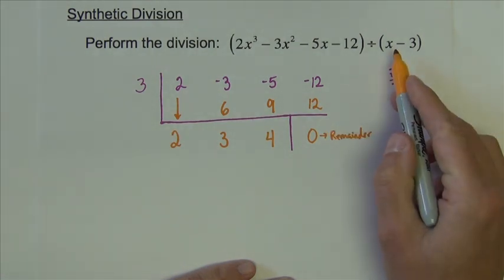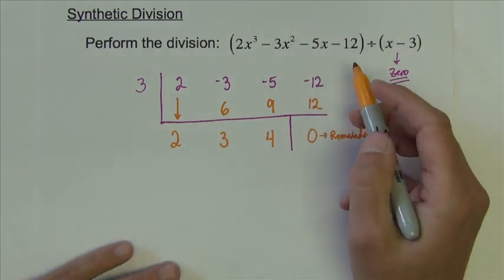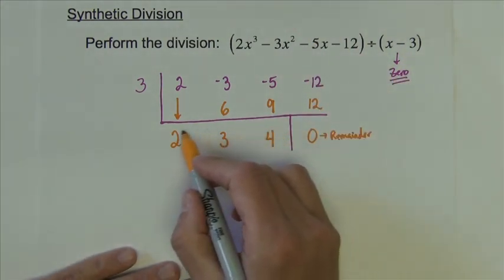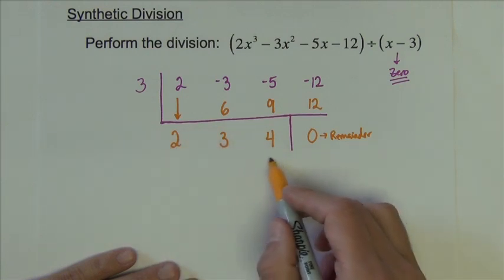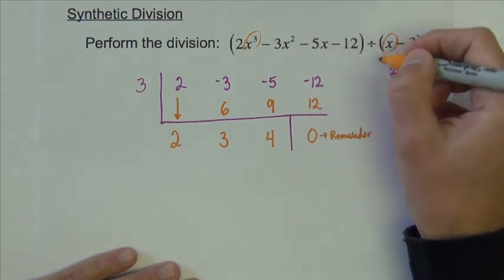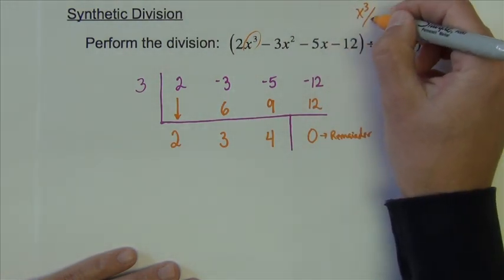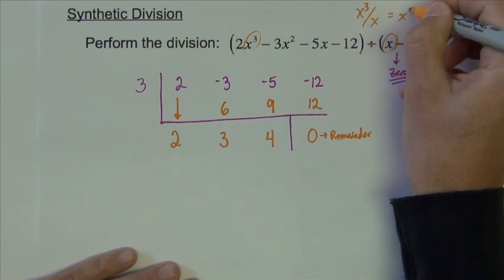In other words, this polynomial divides this one evenly. Okay, so the answer to this division then is represented by these numbers here. And if I just divided x out of x to the third, if we just divided x to the third by x, the result would be x squared.